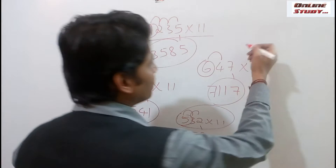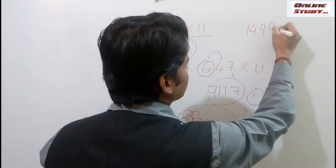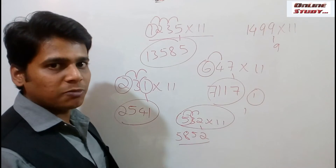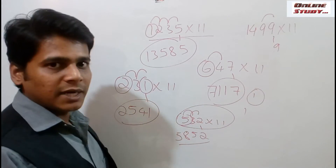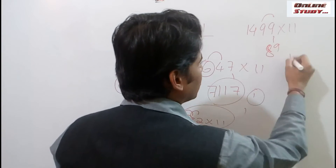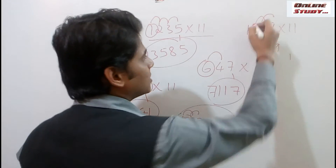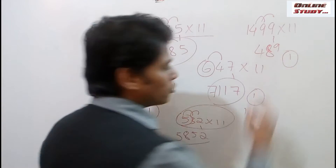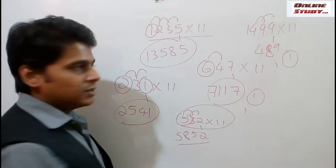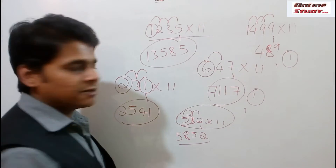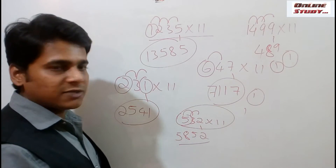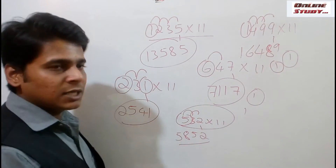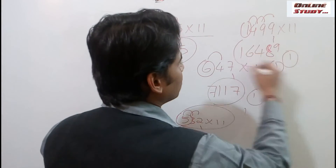We shall take another example: 1499 into 11. Place 9 as it is — since it is the units place, we should place it as it is. Then 9 plus 9 is 18 — we will place 8 and 1 will be carried forward. Next step is 9 plus 4, that is 13. And since we have a carry forward, it will become 14 — so we place 4 and 1 will be carried forward. The next step is 4 plus 1, that is 5. And since we have a carry forward, 5 plus 1 is 6. The final step is place 1 as it is. So the multiplication of 1499 into 11 is 16489.